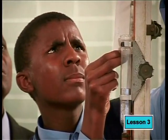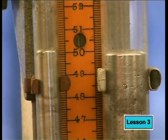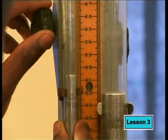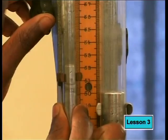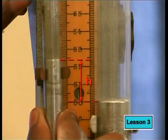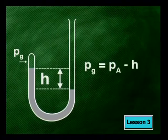Air pressure is exerted on the mercury in the second container. When the levels of mercury in both tubes are equal, the pressure of the gas in the closed container, PG, is equal to the air pressure, PA. When the levels of mercury are not equal, the pressure of the trapped gas is different to the atmospheric pressure. The difference in pressure is equal to the difference in height of mercury, H, measured in millimeters. When the level of mercury is higher in the closed tube than in the open tube, the pressure of the gas is less than atmospheric pressure: PG equals PA minus H.